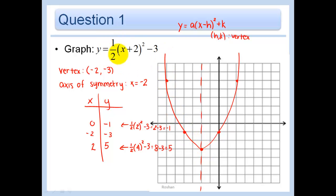We know since the value of a is 1 half, it should be wider than just y equals x squared. And since this is positive, we know that it's opening up, which it is.